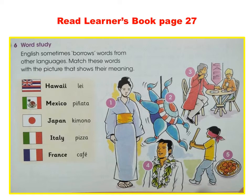Itu beberapa kata yang dipinjam dari bahasa lainnya. Tugas kalian adalah mencocokkan kata Lei, Pinata, Kimono, Pizza, Kali dengan gambar yang ada. Silahkan tarik garis. It's very easy.